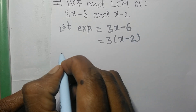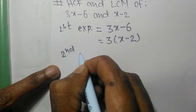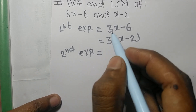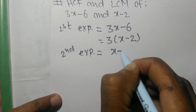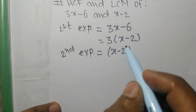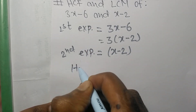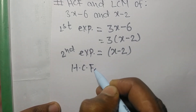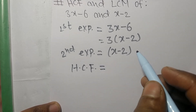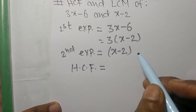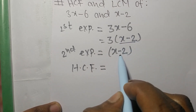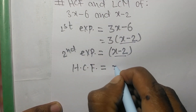The second expression is (x - 2). Now to find the HCF, we take the common factors from both expressions. The common factor here is (x - 2), so the HCF is equal to (x - 2).